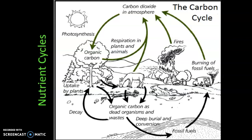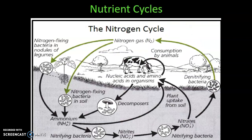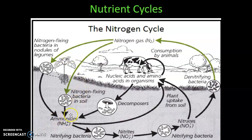There is one more nutrient cycle I want to talk about today, and that's the nitrogen cycle. All living things need nitrogen to make things like DNA and proteins. You would think we wouldn't have a problem getting nitrogen because almost 80% of our atmosphere is made up of nitrogen gas. The problem is that nothing can use nitrogen gas — it's completely inaccessible to us. The only organism on the planet that can take nitrogen out of the atmosphere and convert it into a usable form is bacteria. Specifically, these nitrogen-fixing bacteria take the nitrogen out of the atmosphere and turn it into a form that can be dissolved in the soil — that's ammonia, a toxic, foul-smelling substance.